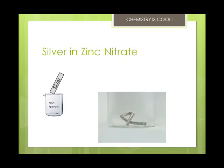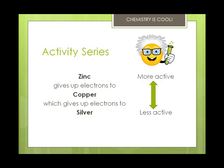In the third beaker, though, there is no reaction. Silver does not give up its electrons in the presence of zinc ions. Chemists would say that this is because silver is not as active as zinc. By combining different metals and metal ions, you can determine experimentally which metals are more active than other metals.